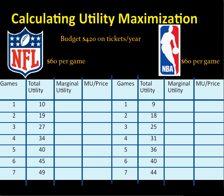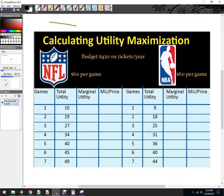So we've got this budget constraint. One thing we want to do is write down the formula. We want to satisfy the condition of the marginal utility of an NFL game divided by the price of an NFL game needing to equal the marginal utility of an NBA game divided by the price of an NBA game.